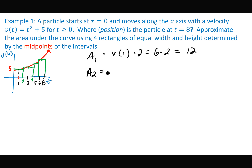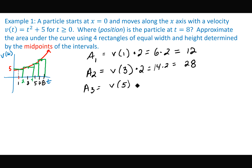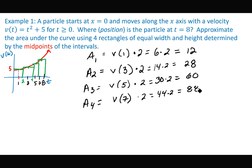Area of the second rectangle: v(3) × 2. v(3) = 9 + 5 = 14, times 2 gives 28. Area of the third rectangle: v(5) × 2. 5² = 25 + 5 = 30, times 2 gives 60. Area of the fourth rectangle: v(7) × 2. 7² = 49 + 5 = 54, times 2 gives 108. Adding all four together: 12 + 28 + 60 + 108 = 208.